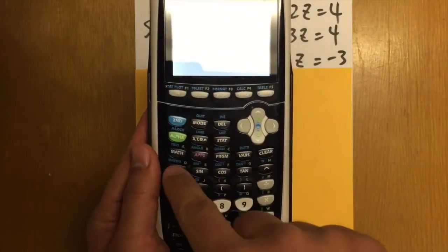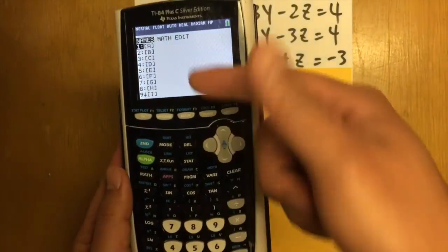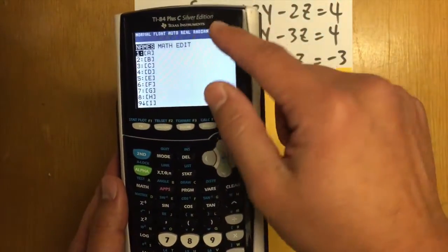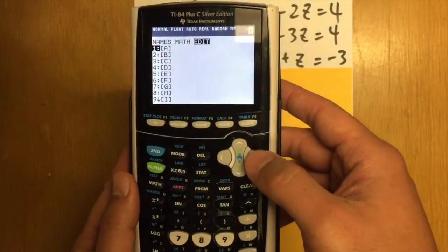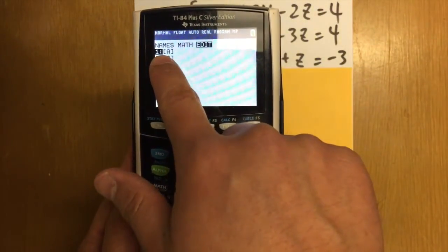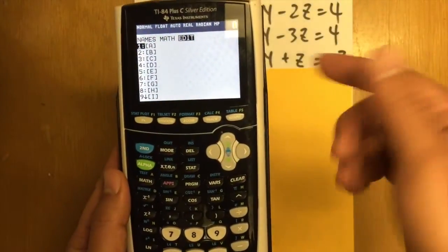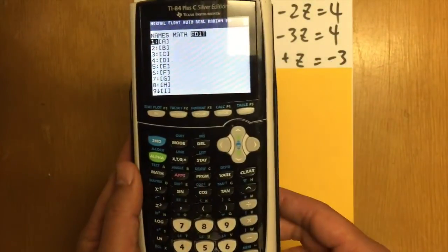So we have to hit second and go to matrix. These are the names of the matrices, but then we are going to first go to edit first. And then we are going to choose the first one so that we can enter our matrix to be matrix A.